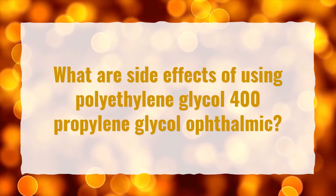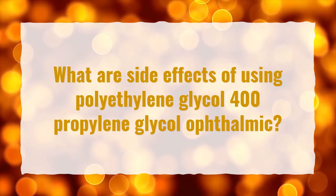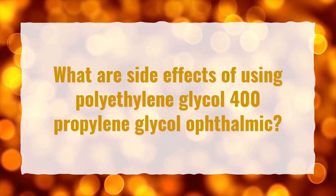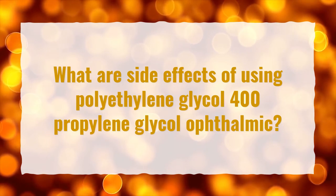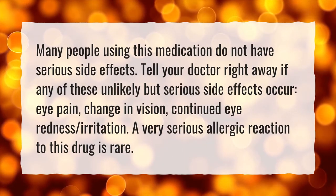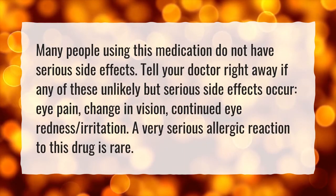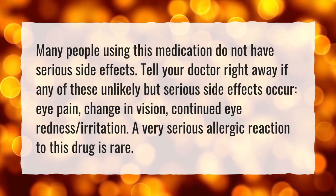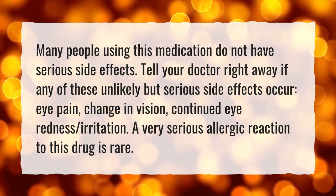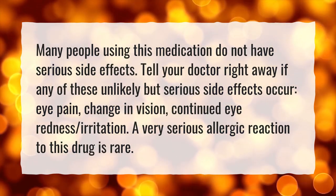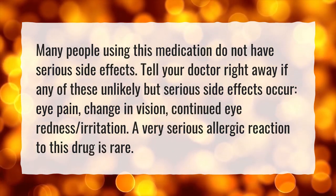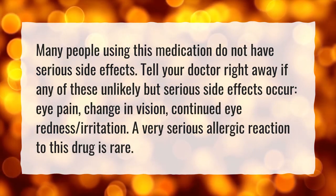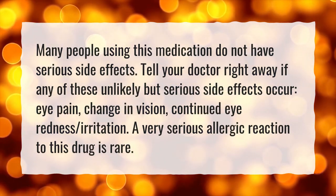What are side effects of using polyethylene glycol 400 propylene glycol ophthalmic? Many people using this medication do not have serious side effects. Tell your doctor right away if any of these unlikely but serious side effects occur: eye pain, change in vision, continued eye redness, irritation.